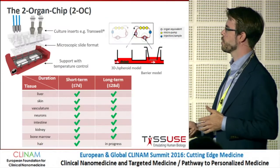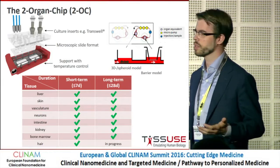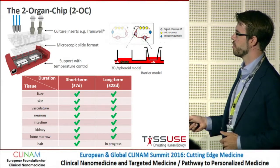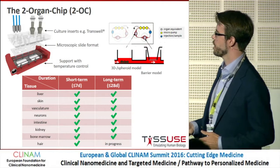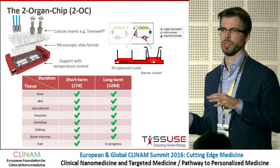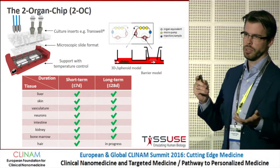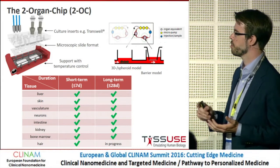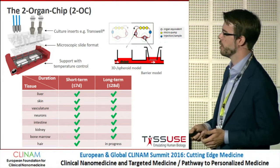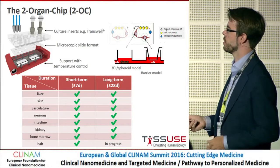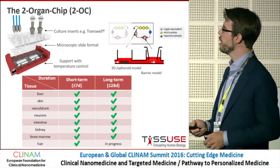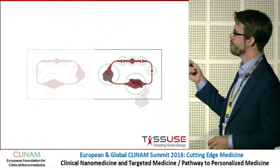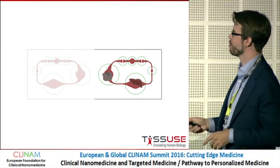Coming to the biology part — what kind of models did we actually culture so far? Here is a list, and it's not even complete. We have different models of liver, skin, kidney — my own project — and these are very different kinds of models. We had biopsies, IPS-derived models, primary derived models, and scaffold-based models. Basically anything you have in static culture you can put into this platform via 2D or 3D. That is really the beauty of the system — you can take any model and combine them in any way you want.